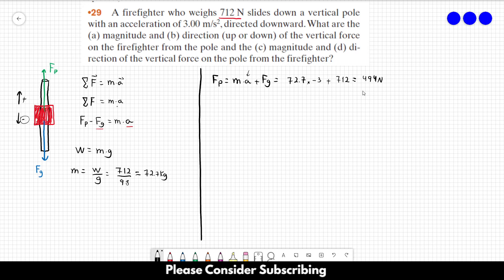So that's the force that the pole makes on the firefighter. OK, so that's the magnitude of the force. So we have to find the direction. So it's pretty clear that since we chose that upwards is positive and the force is positive, so it points upwards. So that's the answer of letters A and B.